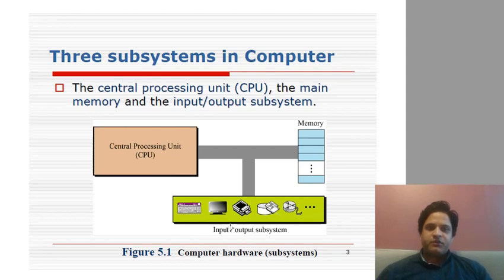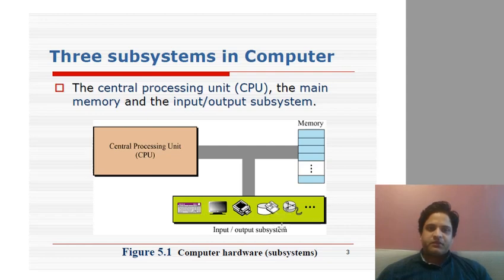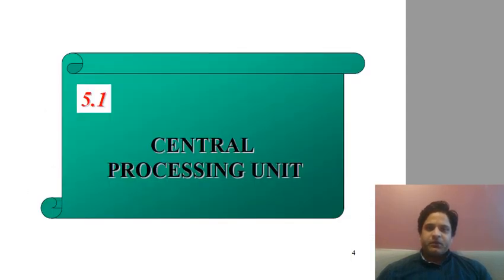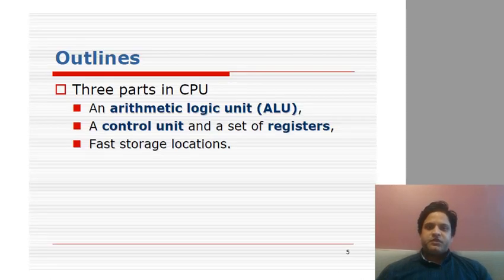The CPU is used for processing everything. The memory, which is RAM, is used for temporarily holding data you might be working on. In the input/output system you have the keyboard, monitor, printer, hard drive, or any other system used for getting input or saving output. We'll go through all of these components one by one in detail. Starting with the Central Processing Unit, a CPU can be divided into three main parts.